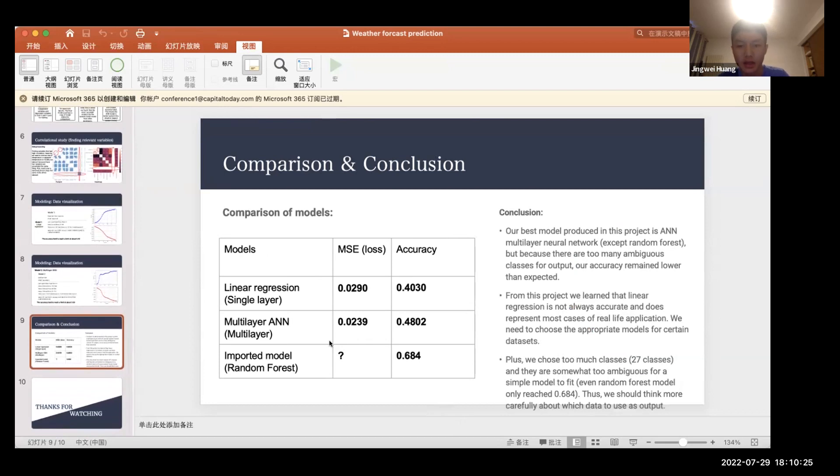So now we can do a little comparison of all those models. The loss of the multi-layer artificial neural network model has a lower loss than the first model, thus its accuracy is higher. But it seems that both of these two models didn't have a good performance on this dataset because neither of them reached accuracy over 50%.